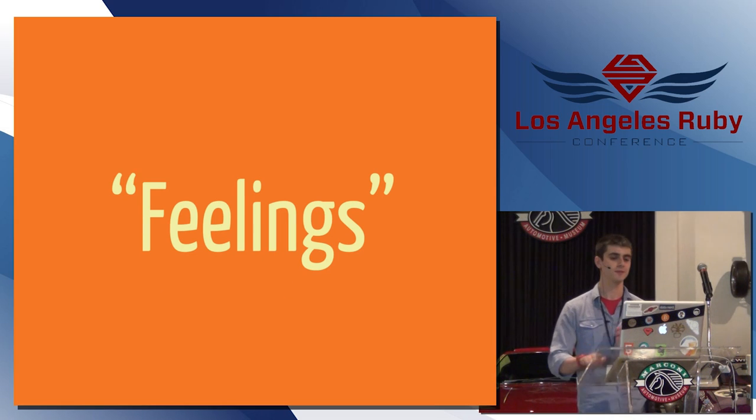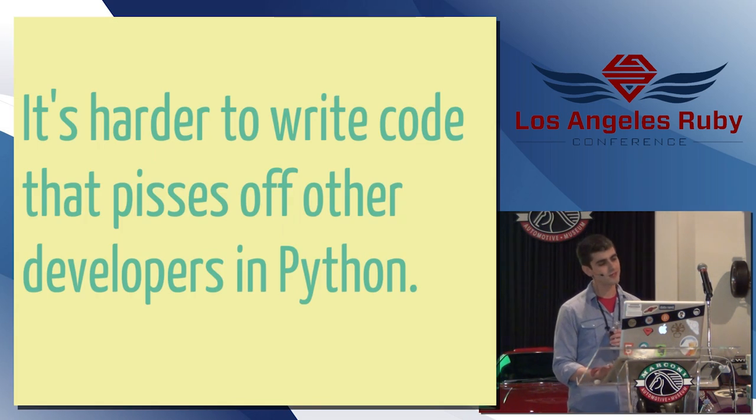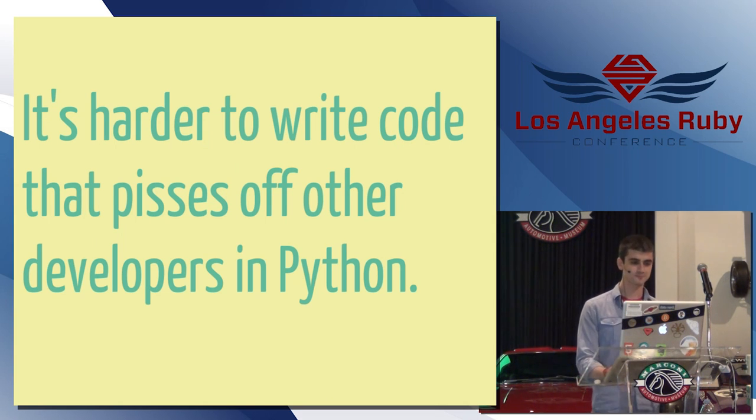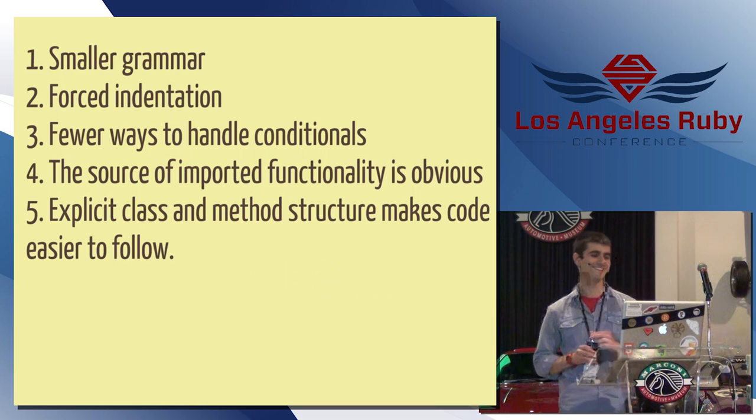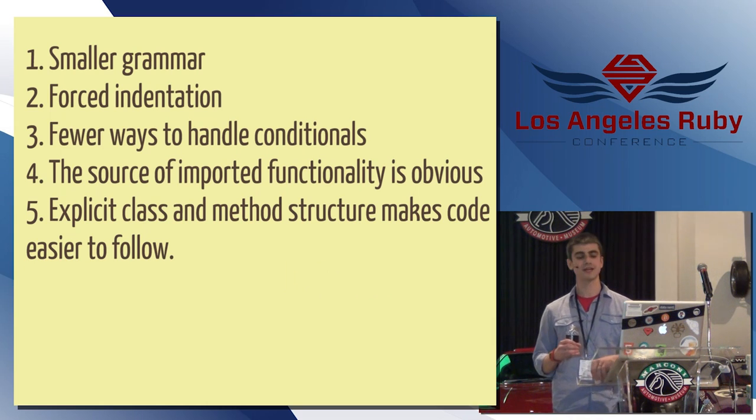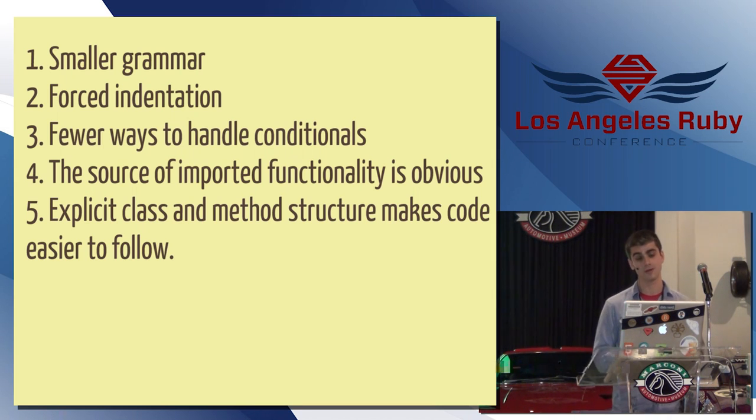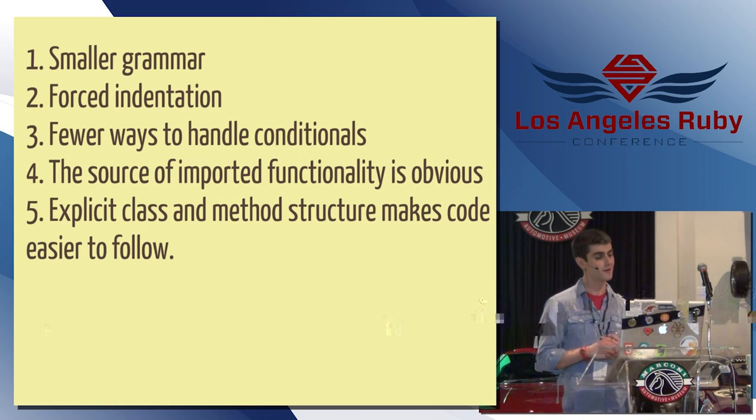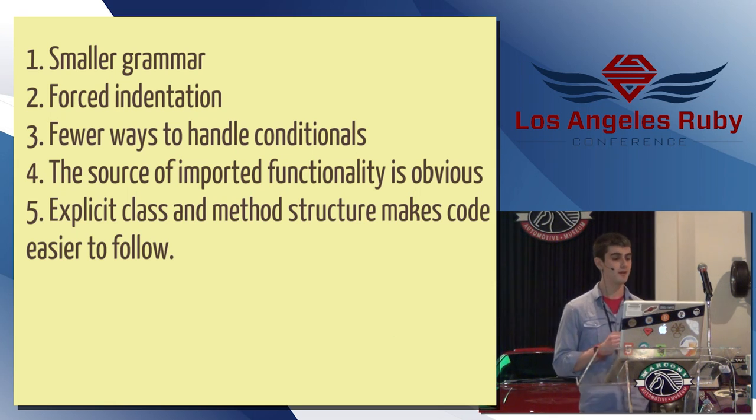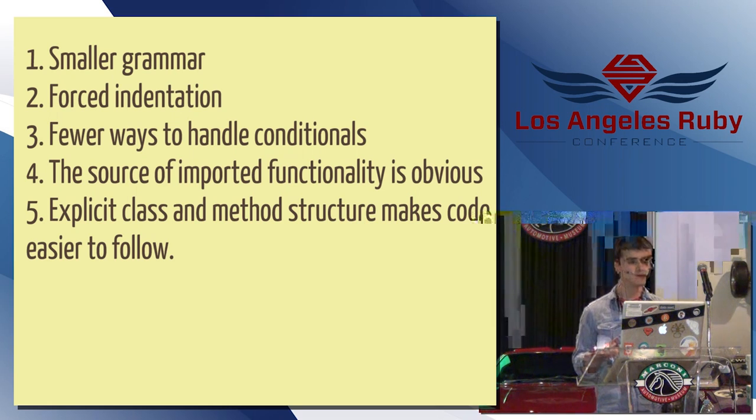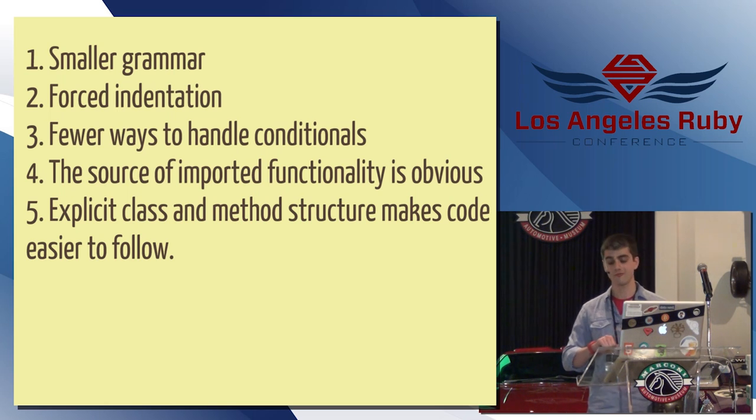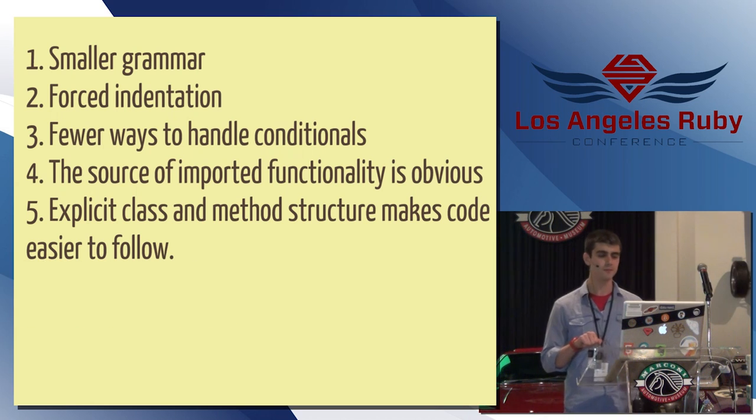Okay. Now I'm going to talk about my feelings. I think it's harder to write code that pisses off other developers in Python. The grammar in Python is smaller. Like I said, there's fewer ways to handle conditionals. Things like that. And so the way that you envision good Python code looking is probably very similar to your coworker who also writes Python. Definitely not always the case in Ruby. There's plenty of contentious stuff in terms of, you know, standards, coding practices, things like that. Also, you have forced indentation, which I think makes things a bit more readable. You know, the source of imported functionality is very obvious because of more fine-grained import statements. And I think just the explicit nature of things, even though maybe it's more verbose when you're writing, makes it easier to read.